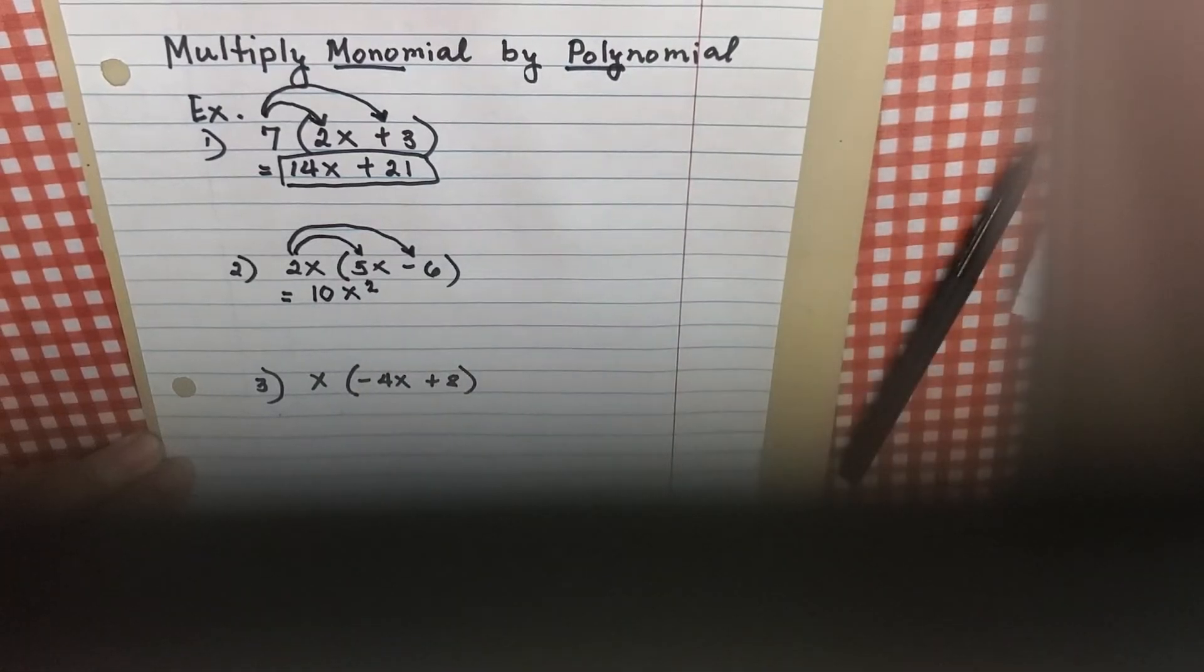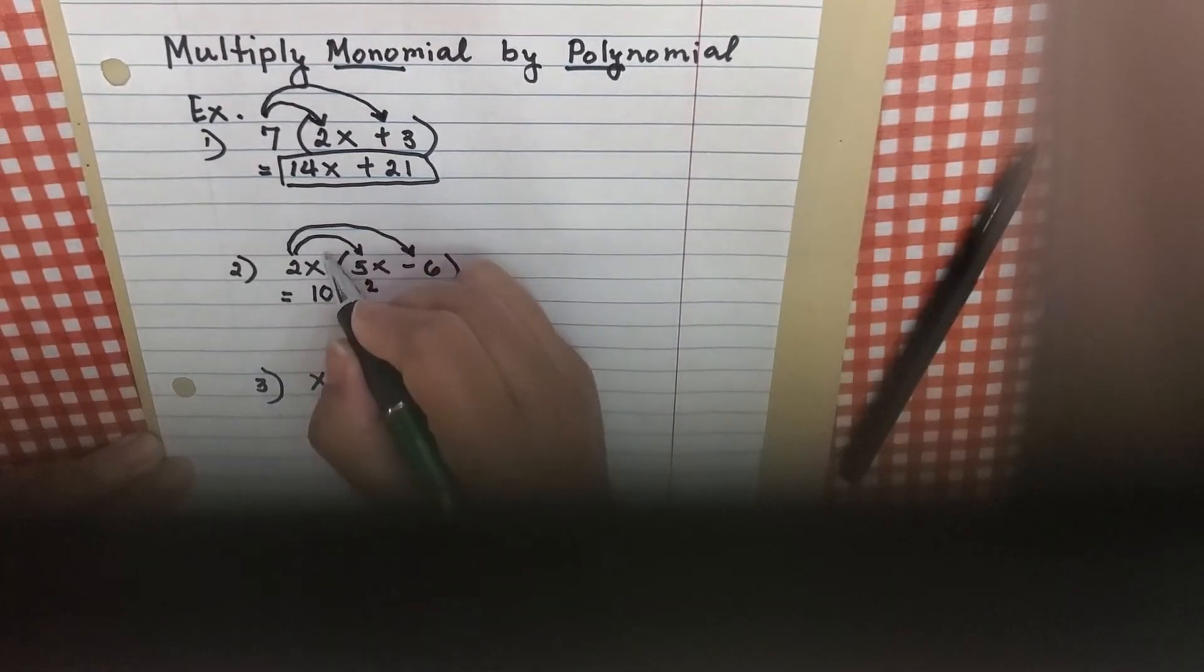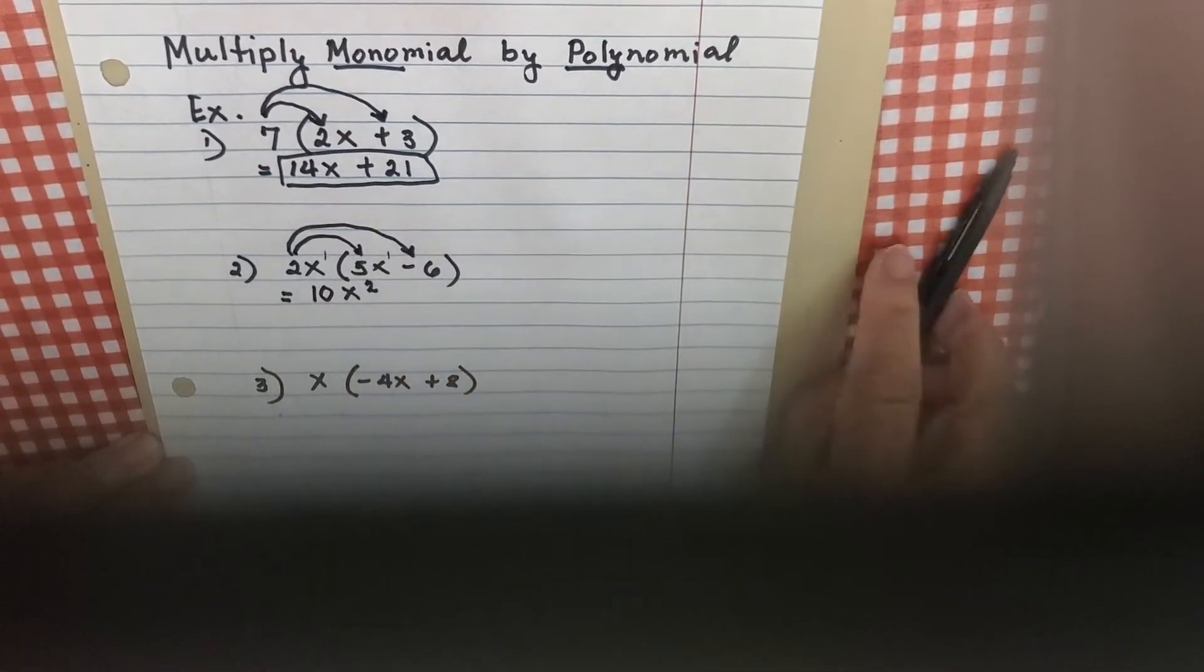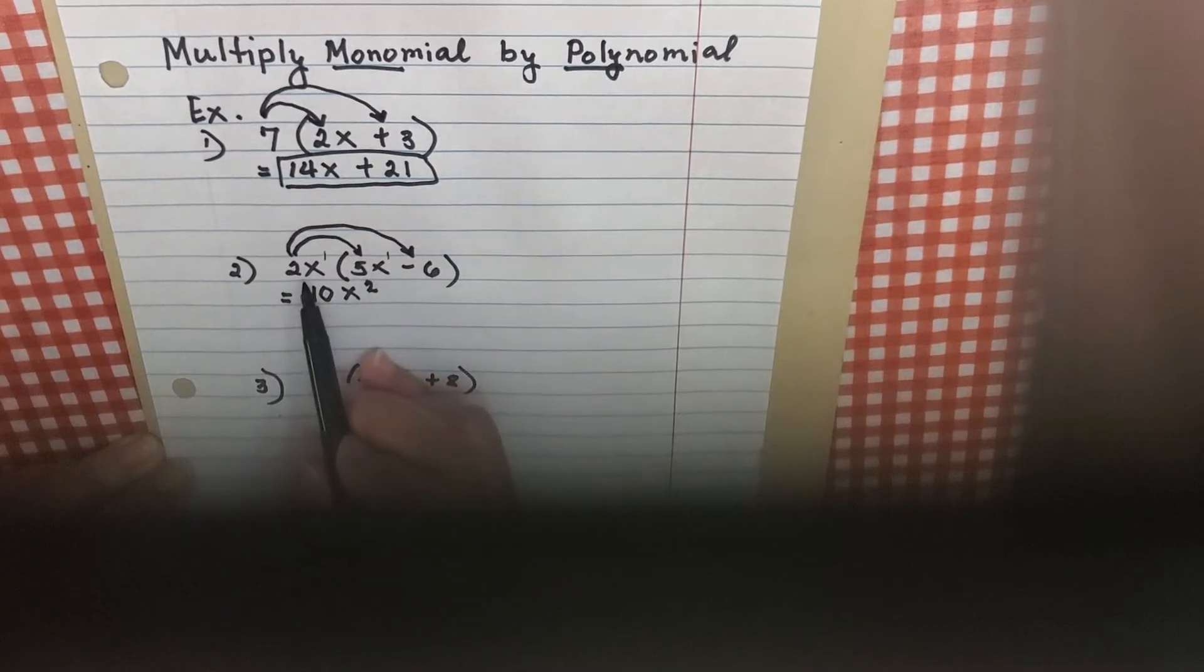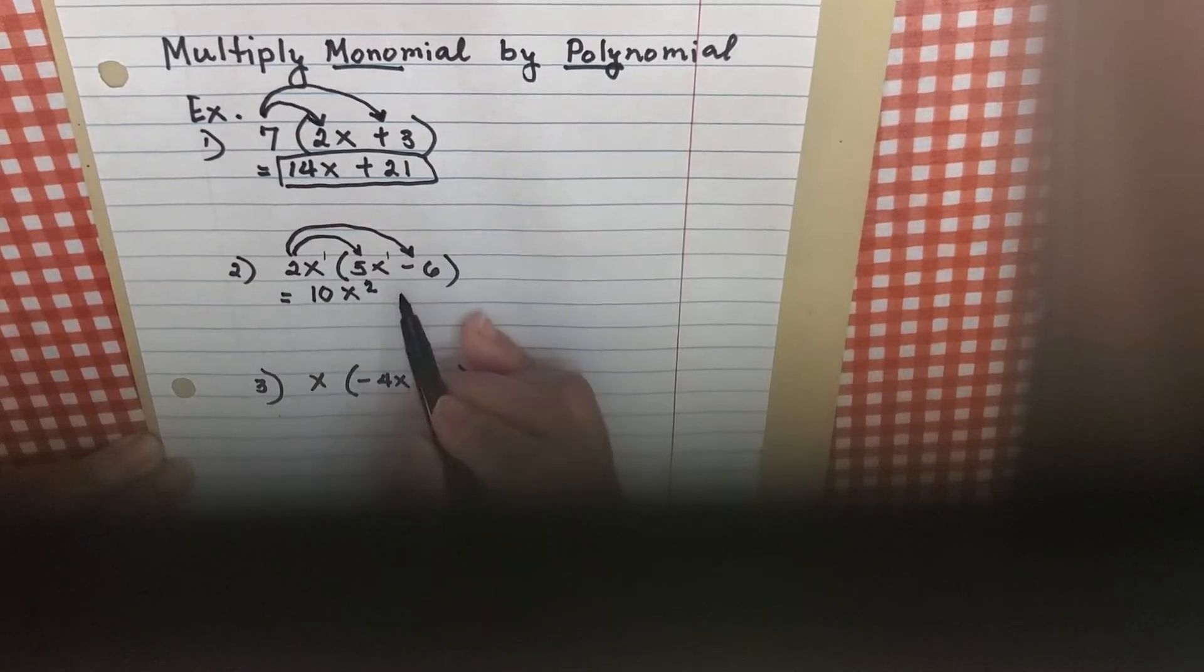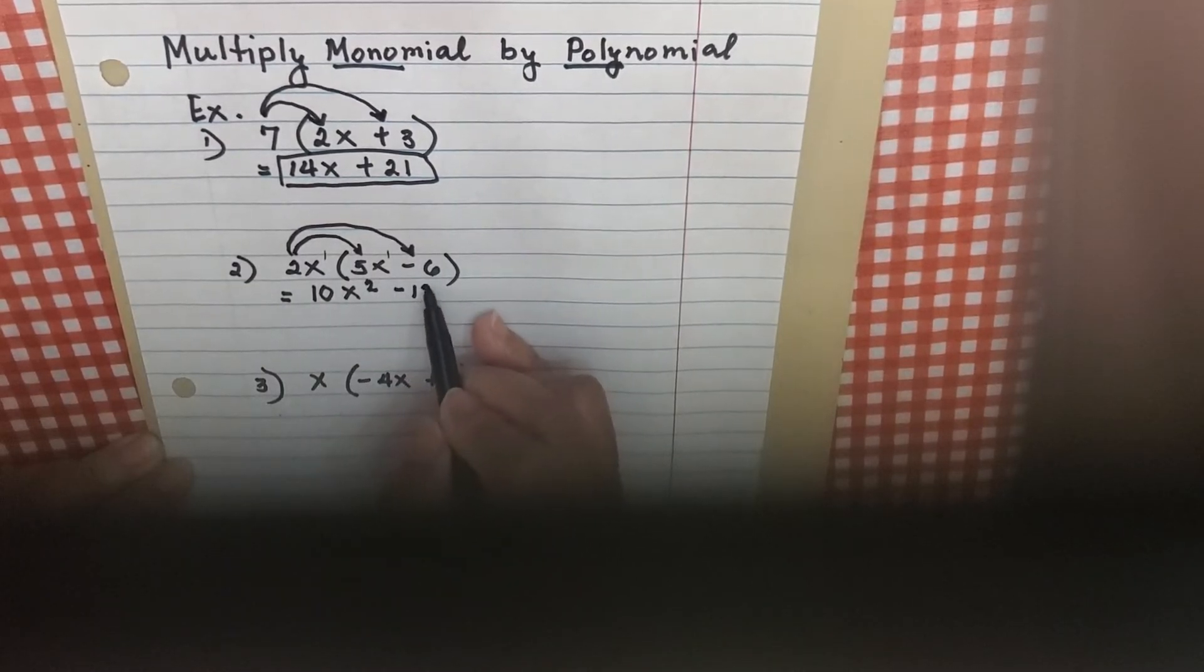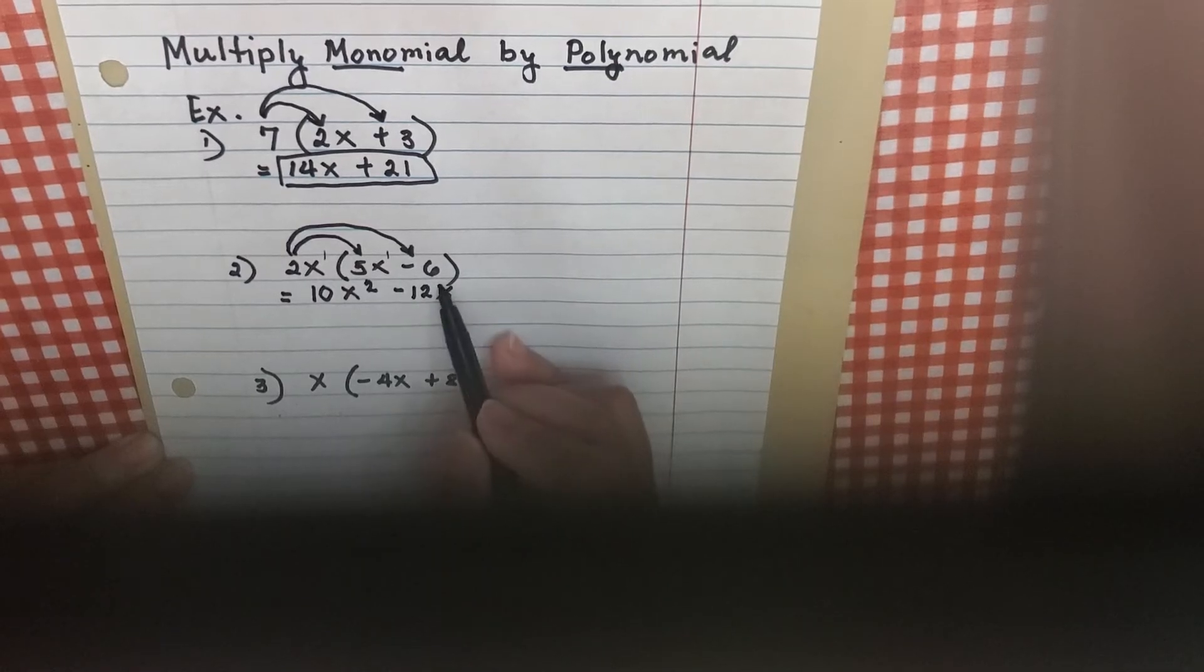Remember that when I have x, there is an invisible 1 exponent. So you're going to add 1 plus 1. And then 2x times negative 6 is negative 12x. And that's it.